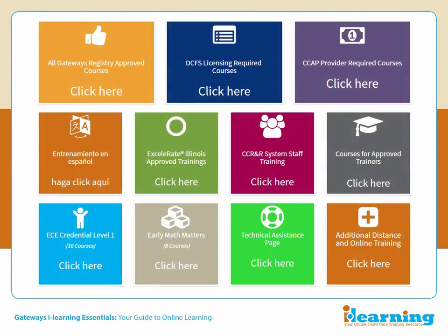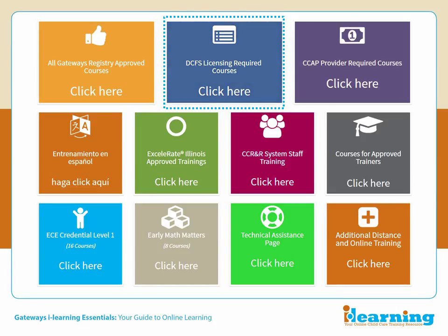The easiest way to locate courses is to use the colored category blocks. All the courses in the iLearning System are sorted into categories. If you are a child care provider who needs to complete the required trainings for DCFS licensing, you can click the dark blue box on the Click Here link to see the complete list of those trainings. Courses may meet the needs or descriptions of several categories. For instance, the Spanish version of the Sudden Infant Death Syndrome training appears in this category, but it will also appear in the list of Spanish language courses and in the list of Gateways to Opportunity Registry-approved trainings.